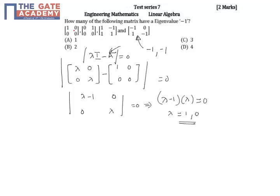You will get some other values. For the first matrix you didn't get any minus 1. Similarly, you will not get minus 1 as an eigenvalue for these two matrices. The only matrix which will give eigenvalue minus 1 is this matrix, and both eigenvalues are minus 1.